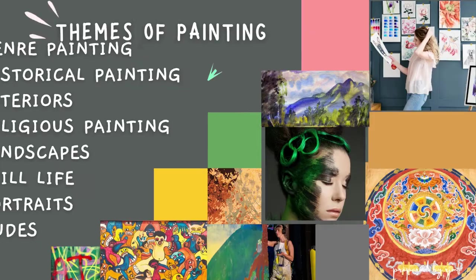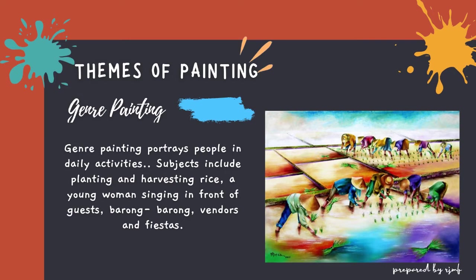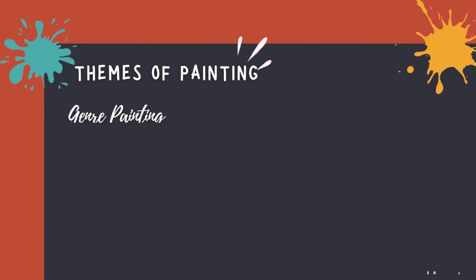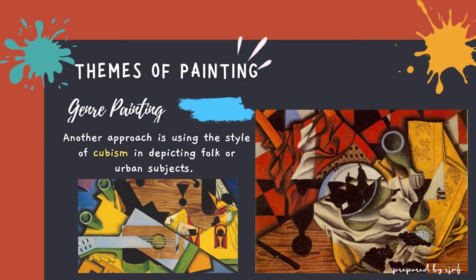The first one is genre painting. Genre painting portrays people in daily activities. Subjects include planting and harvesting rice, a young woman singing in front of guests, barong-barong, vendors, and fiestas. During the contemporary period, genre painting took several directions. One of these new approaches is folk genre, which mainly focuses on the everyday activities of the folk. Another approach uses the style of cubism in depicting folk or urban subjects. Folk naive is another style that uses a lot of color and spontaneity, inspired by children's art.